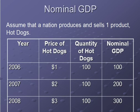For example, let's look at nominal GDP. In the year 2000, the price of hot dogs was $1 and the quantity produced was 100, so our nominal GDP is $100. In 2007, the price of hot dogs jumped up to $2, producing the same quantity of 100 hot dogs, giving us $200. In 2008, the price is $3, and with 100 hot dogs produced, that's $300. That's the nominal GDP for this country that produces one product: hot dogs.